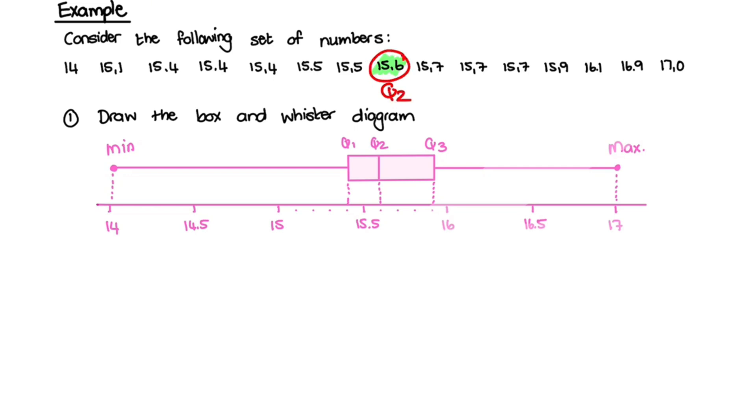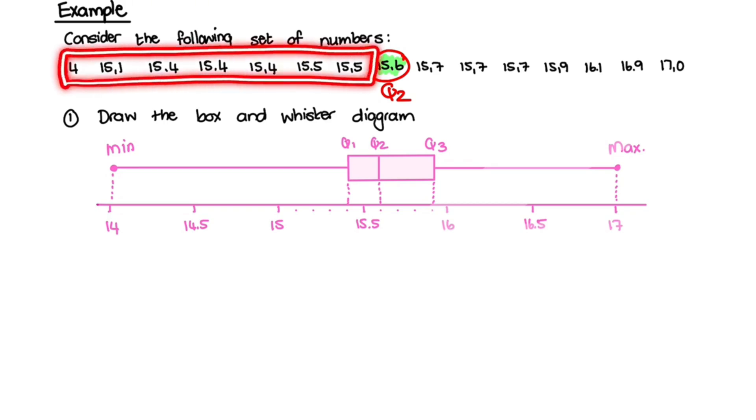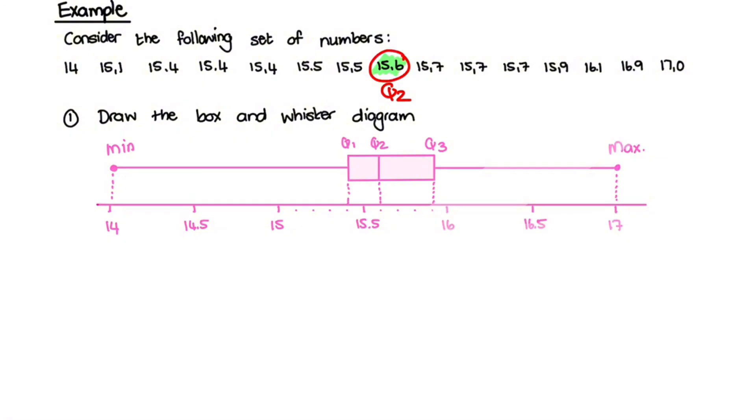And what I want you to notice is that the data was already arranged in ascending order, and if we take the median, to the right of that, we have 7 values, and to the left of that, we have 7 values. So this is the exact middle. For quartile 1, we take the median again, but only for the lower half of the data. So here we have 7 values, and the lower half of the data is 15.4, so that is quartile 1.